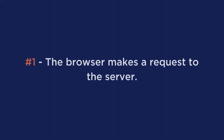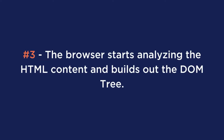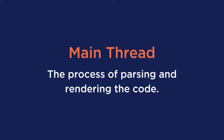In order to understand that, we first need to understand what happens when you want to load a page's content. The first thing that happens is the browser makes a request to the server, and then second, the server sends back the requested content, and then third, the browser analyzes the HTML content and builds out the DOM tree, which is the HTML structure. Only after doing this, the browser can now render and display the content that you want to see. The process of parsing and rendering the code is the browser's main thread.